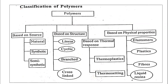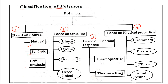Now let us discuss the classification of polymers. Polymers are the molecules having a number of repeat units — poly meaning many, mer meaning molecules. Polymers are classified in four ways: based on source, based on structure, based on thermal response, and based on physical properties.